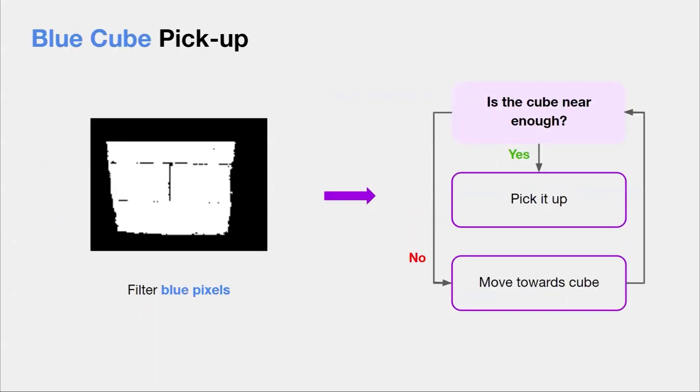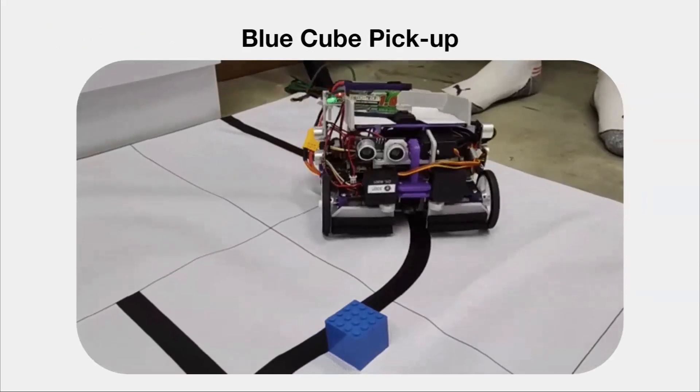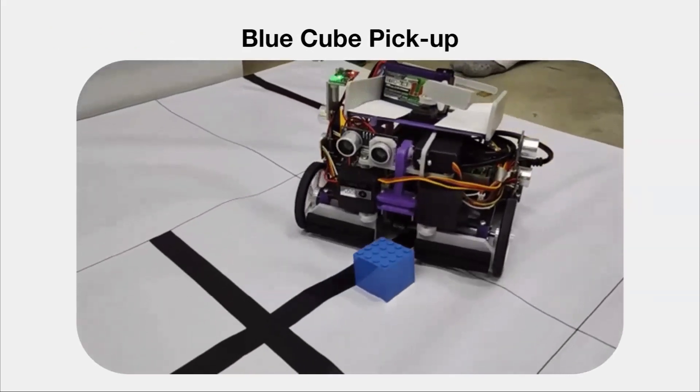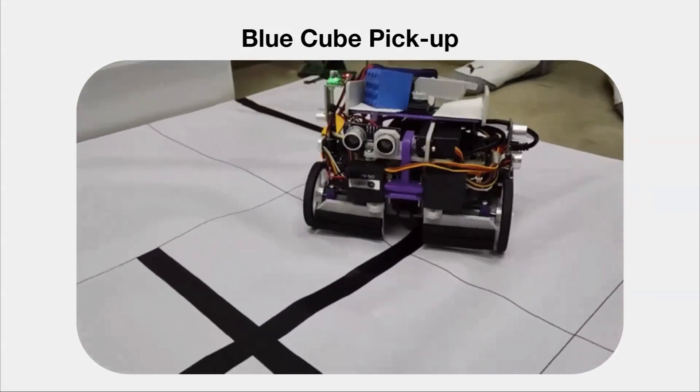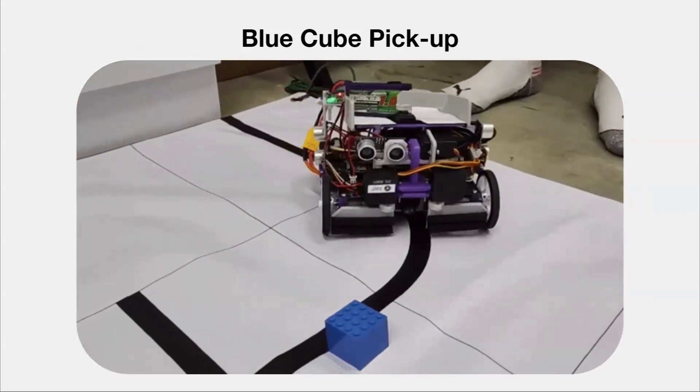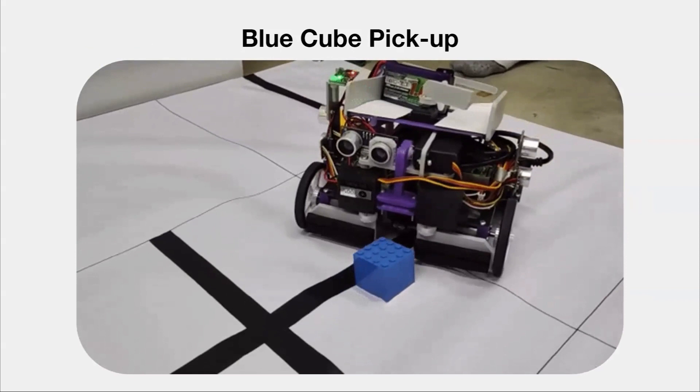For blue cube pickup, we first filter blue pixels. When the cube is still some distance away, the blue pixels contribute some vectors to the overall vector calculation, so the robot's line track will be biased towards the cube, making the pickup sequence easier. To compensate for the bias, we undo the movement after pickup so we can reacquire the line. If the lowest y value of the blue contour is below a certain value, the cube is determined to be near enough to be picked up. The robot will then center itself to the cube and pick it up.